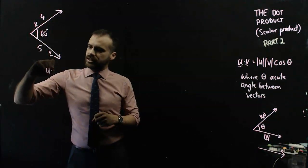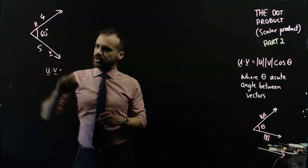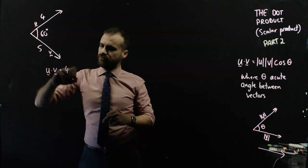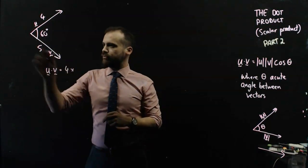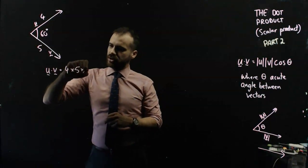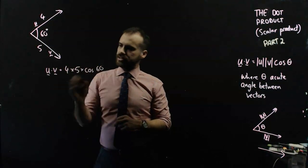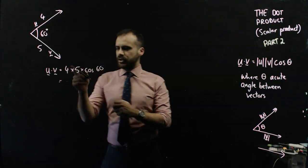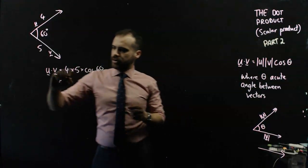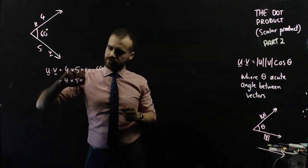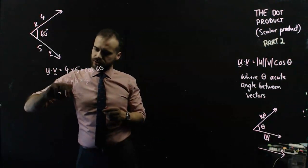So very simply, we can say that u dot v is equal to the magnitude of u, 4, times the magnitude of v, 5, times cos 60. Okay, so I know that cos 60 is 1/2, so 4 times 5 times 1/2 is equal to 10.